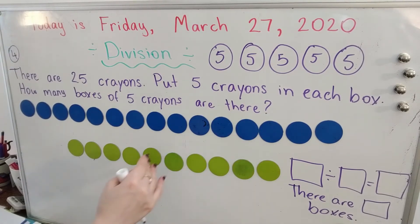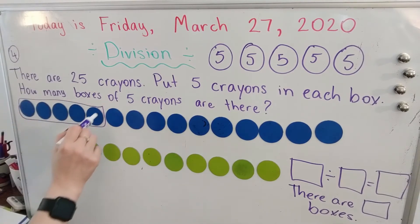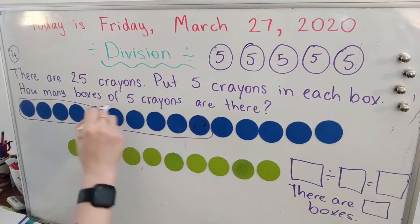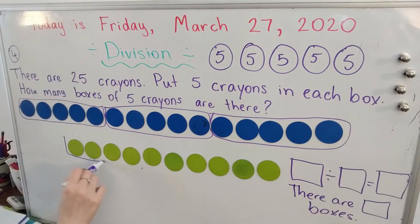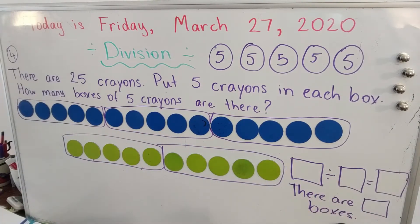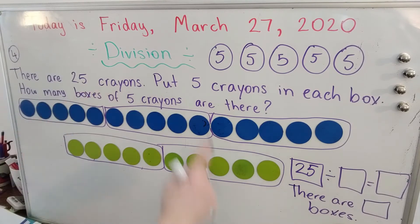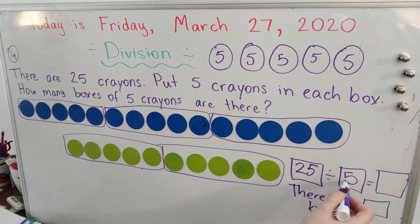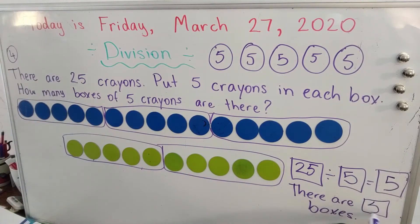But since we do have our counters, we can put the five crayons and check visually. Here is one, two, three, four, five — this is one box. One, two, three, four, five — here is my second box. One, two, three, four, five — there is my third box of crayons. One, two, three, four, five — here is my fourth box. And here is my fifth box. There are one, two, three, four, five groups. So when writing our division equation, we always start with the total. There are 25 crayons, divided by the number in each group which is five, and the answer represents how many groups of boxes there are, which is five. There are five boxes.